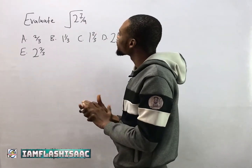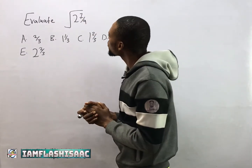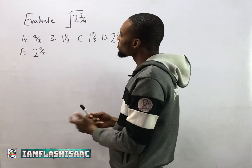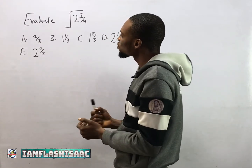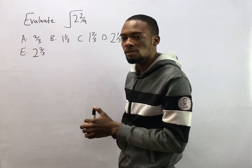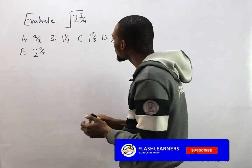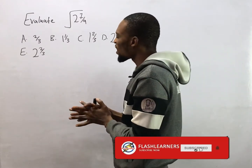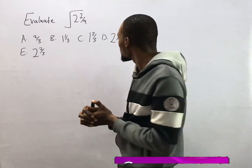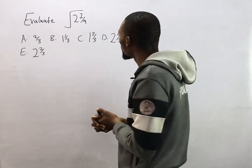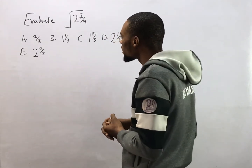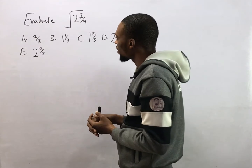Evaluate the square root of 2 whole number 7 over 9. Option A says 2 over 3. Option B says 1 whole number 1 over 3. Option C says 1 whole number 2 over 3. Option D says 2 whole number 1 over 3. Option E says 2 whole number 2 over 3.